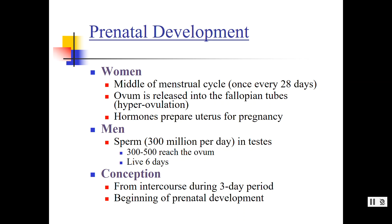Hyperovulation is just part of our genetics and how things happen. It could lead to fraternal twins. Identical twins result from one egg and one sperm that splits, whereas fraternal twins are due to hyperovulation — more than one egg was dropped at the same time and both, or more than two, were fertilized.